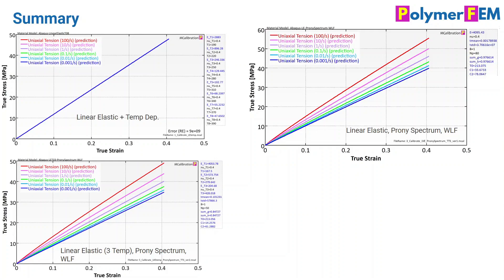To compare these models: the traditional approach is linear elastic with temperature dependence — at a given temperature you get a single stress-strain curve with no strain rate influence. The linear elastic model with Prony series and WLF (without temperature-dependent elasticity) shows strain rate dependence but no elastic temperature softening. The most accurate model is likely the linear elastic with temperature dependence plus a Prony series spectrum plus WLF. The stress-strain predictions from this combined model are relatively similar to the case without temperature-dependent elastic stiffness.